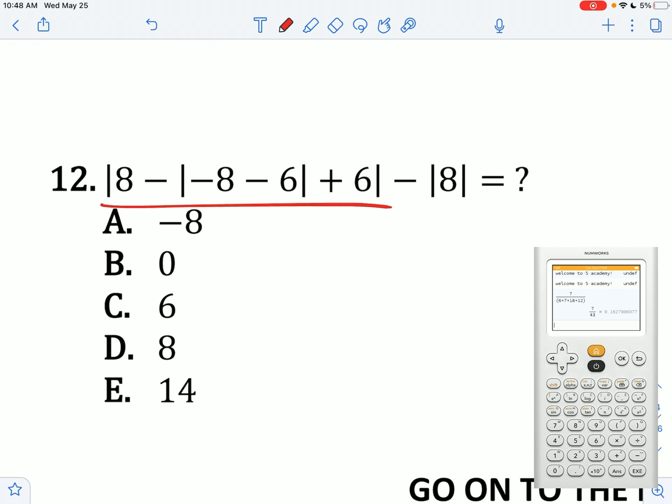How do we solve this? I see I have a complex absolute value here and then just a singular one here. So this entire thing just equals 14. 8 minus 14 plus 6 is 0. Negative 8 is your answer.